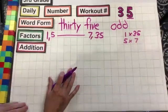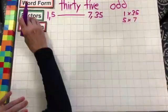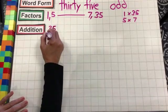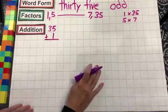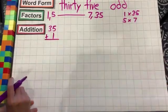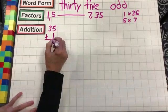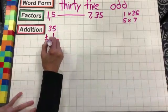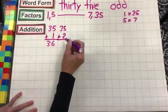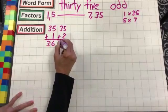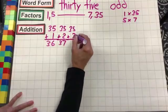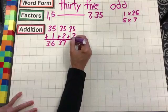Let's go into our addition. So, 35 plus one — you can start stacking them. I know we've been doing them sideways, but you can stack them like I'm doing now. Five plus one is six, three plus nothing is three. 35 plus two: five plus two is seven, three plus nothing is three. 35 plus three: five plus three is eight, three plus nothing is three.